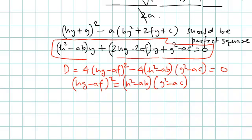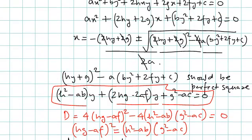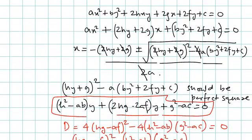The condition for a degree-2 equation to represent a pair of lines — that is, the product of two linear terms — can be expressed as the determinant involving a, b, c, f, g, h equal to zero. We can simplify this and express it in this form: this is the condition for a degree-2 equation to represent a pair of lines.